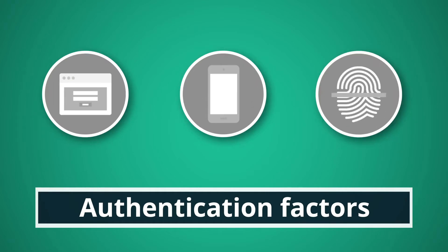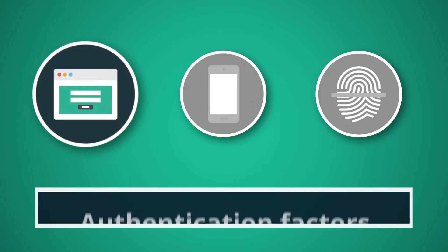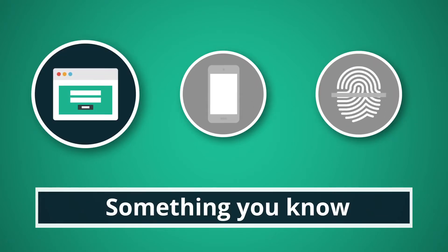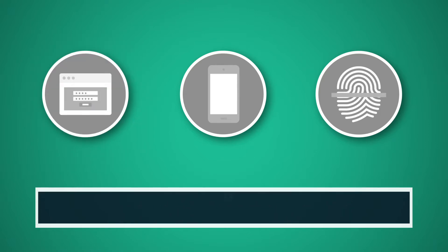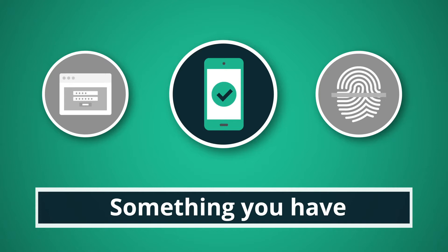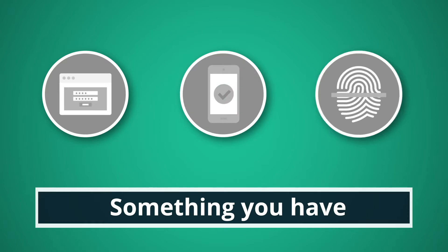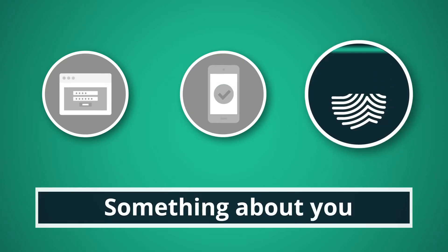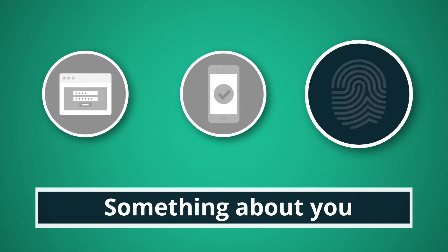There are three big authentication factors. The first one is something you know — something like a password, for example. The next one is something you have, meaning things like a smart card that you actually have on your person that you can use to authorize you. And the last one is something about you, which is what we call biometrics — things like retinal scanners and devices that measure the veins in your palm.